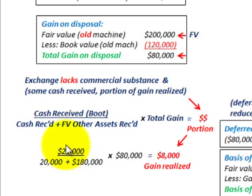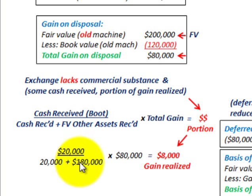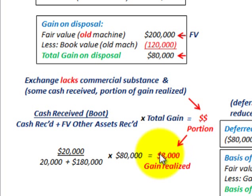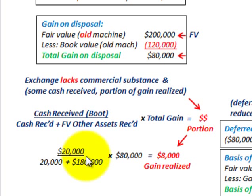The cash received was $20,000, divided by the sum total of the cash received at $20,000 plus the fair value of the other assets received — the fair value of that new machine we're receiving is $180,000. Taking that sum total into our cash received gives us the fractional amount, which we then multiply times the total gain of $80,000. The portion of the gain that has to be realized is $8,000.